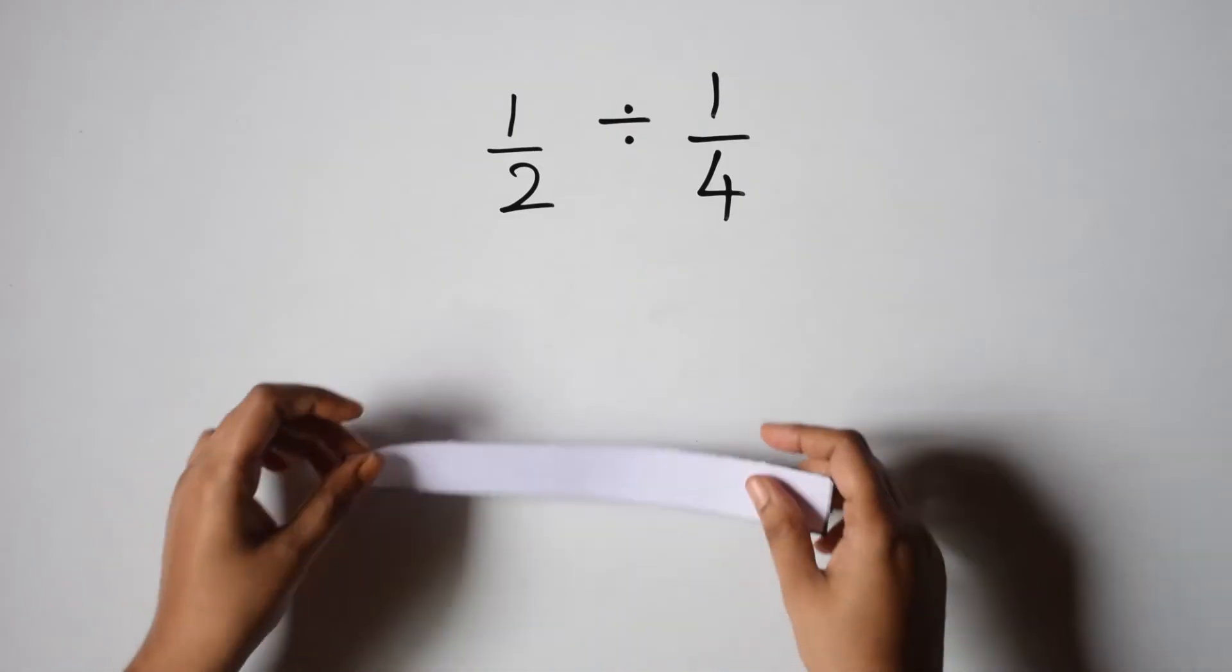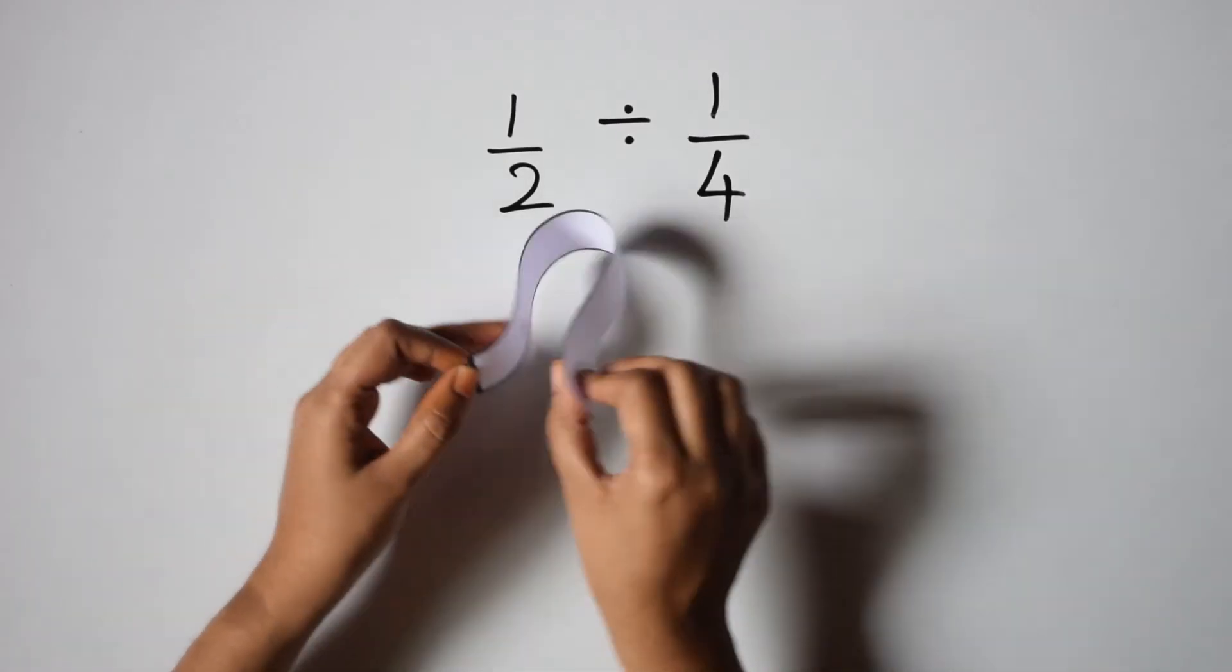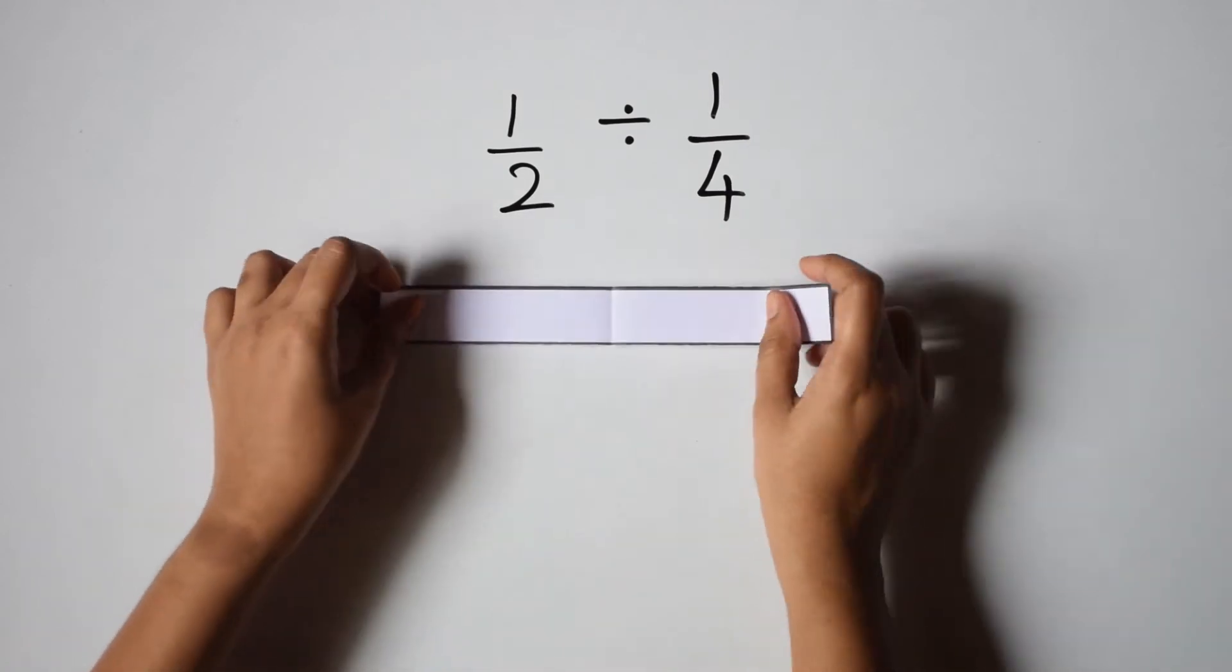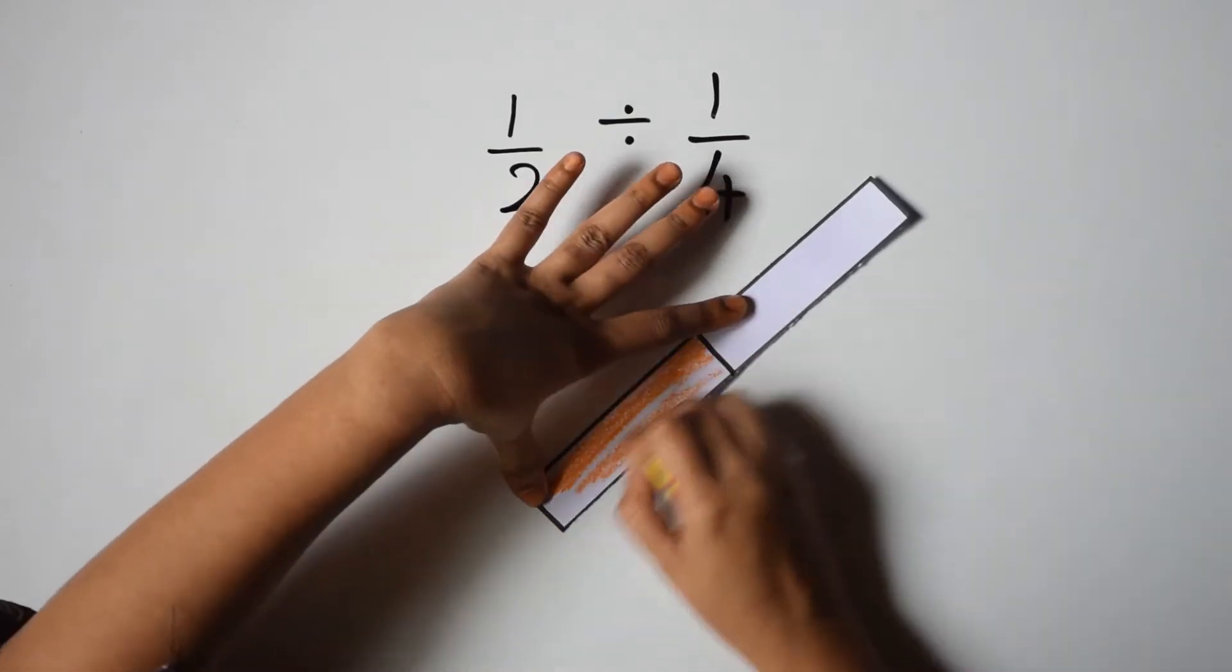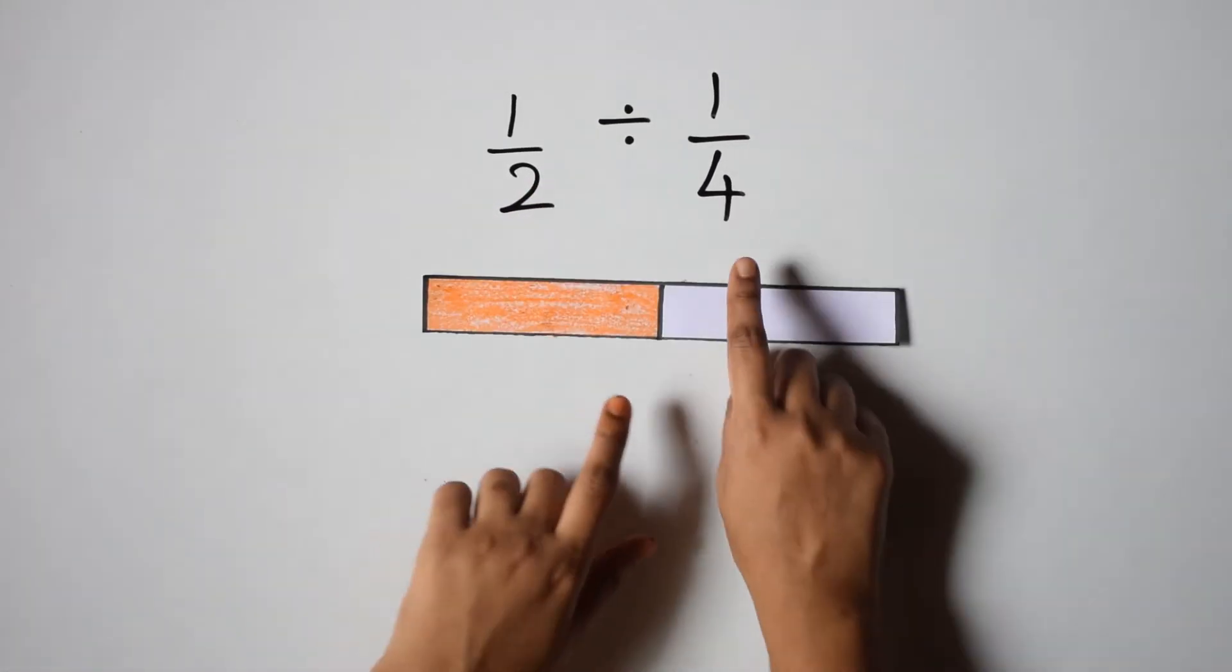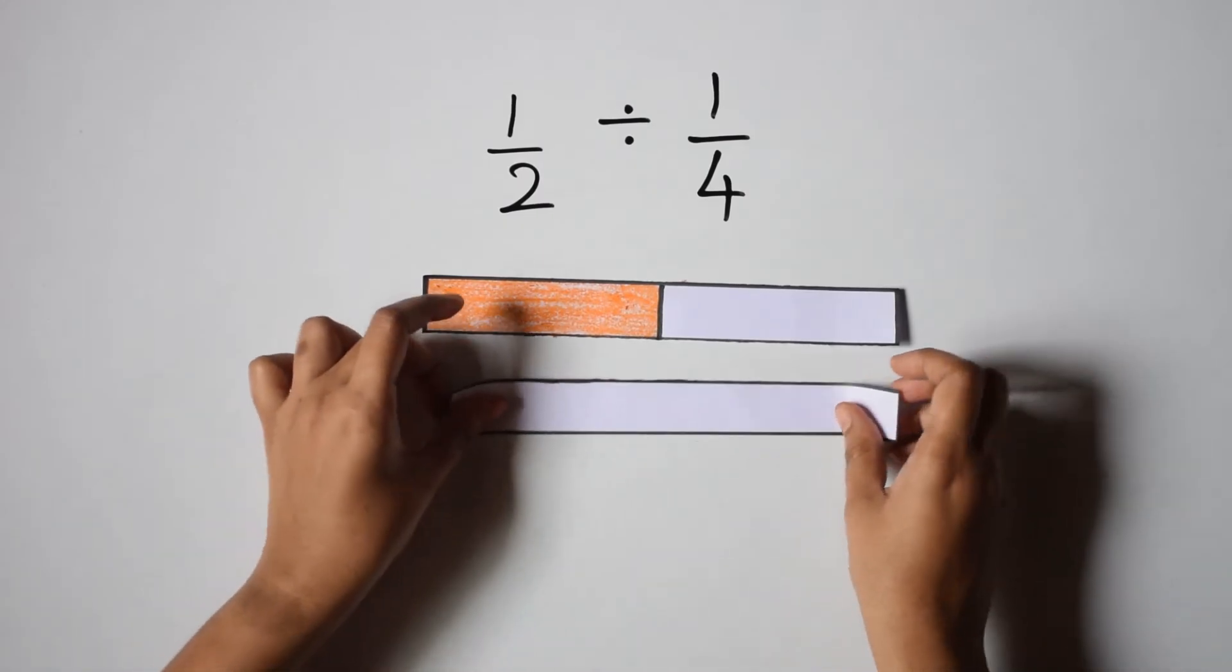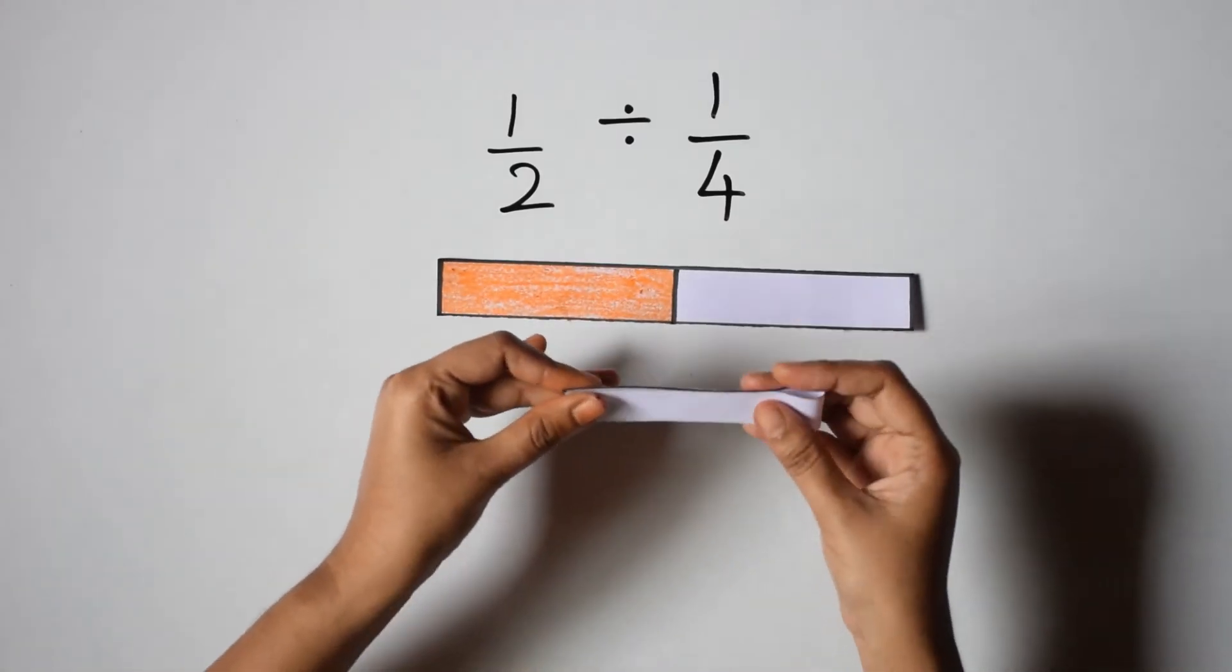Now let us denote half on this paper strip. Since the denominator is 2, we divide this paper strip into two parts and the numerator is 1 so we color one part. Let us now denote 1 by 4 on another paper strip. Since the denominator is 4, we divide this into 4 equal parts.